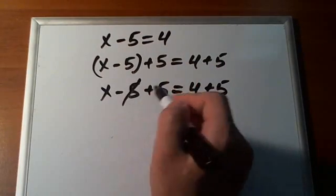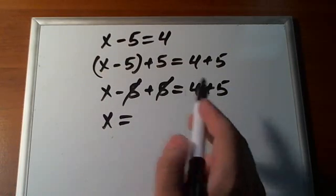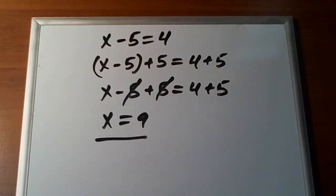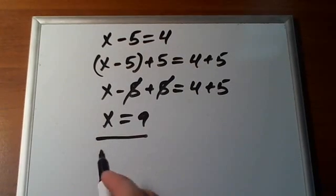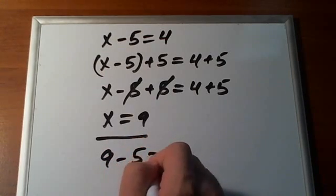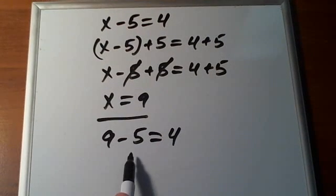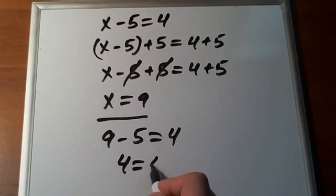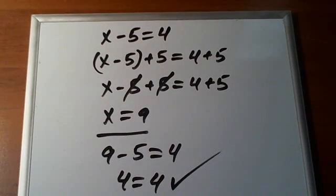Minus 5 and plus 5 go away. We have x left, and 4 plus 5 is 9. So x is equal to 9 — that is our solution. We can plug in 9 into the equation: 9 minus 5 has to equal 4. Well, 9 minus 5 is 4, so we have 4 is equal to 4. Therefore, x equals 9 is indeed our solution.